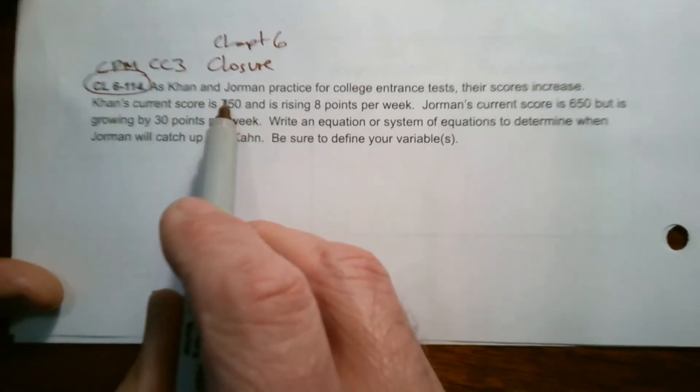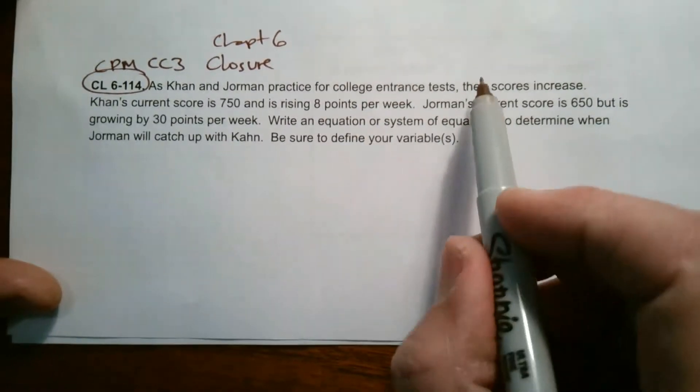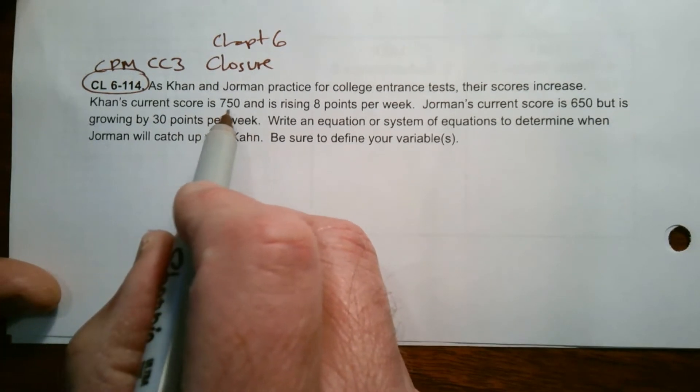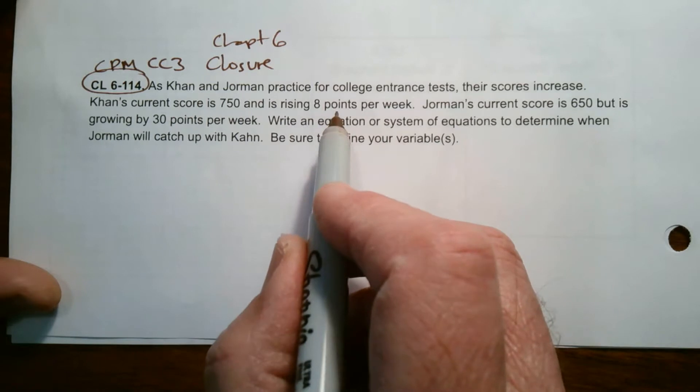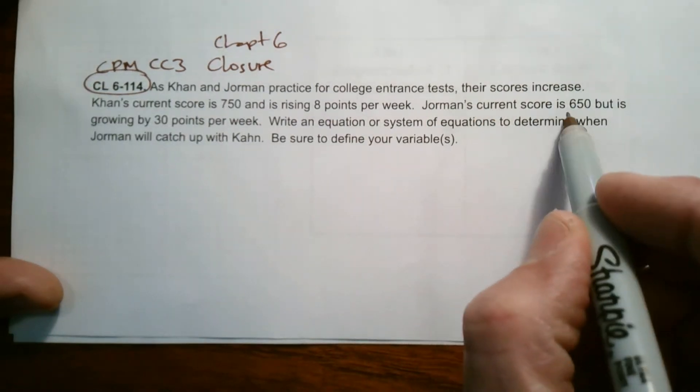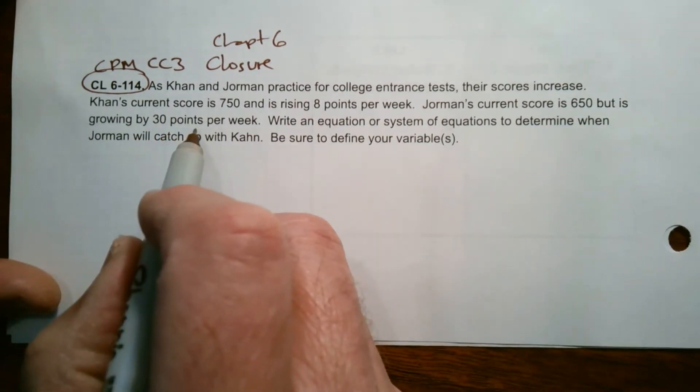As Khan and Jorman practice for college entrance tests, their scores increase. Khan's current score is 750 and is rising 8 points per week. Jorman's current score is 650 but is growing by 30 points per week.